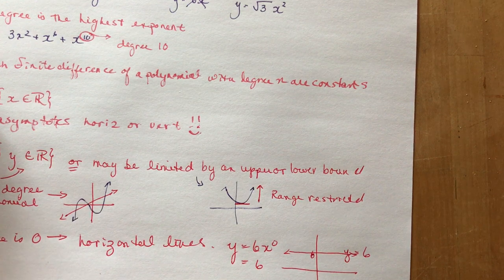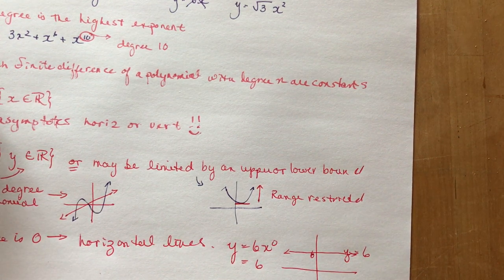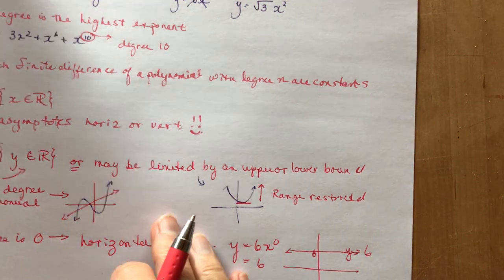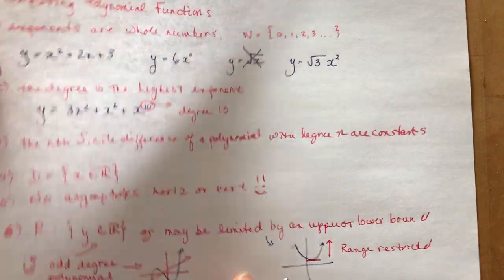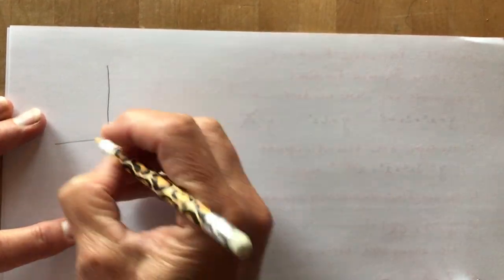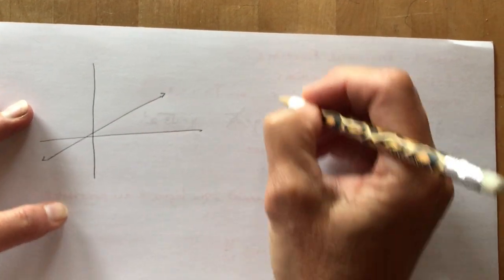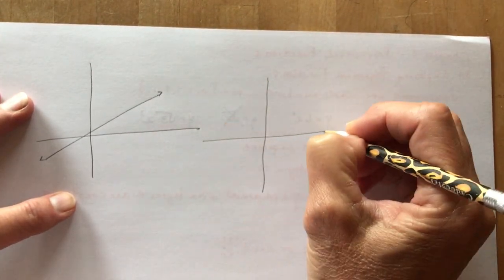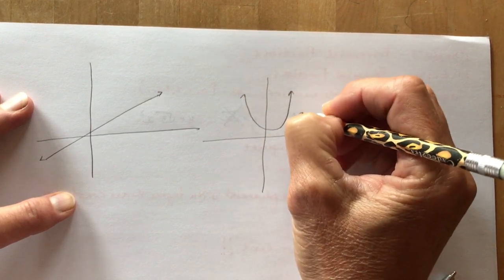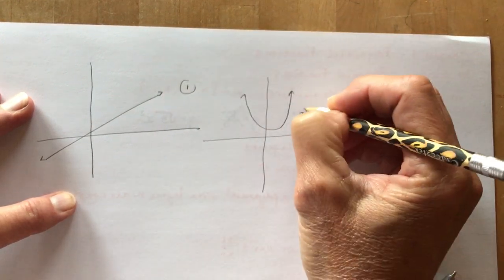What else do we need to know? If we have, maybe we'll sketch a few functions. Different functions. I think you'll be pretty good with these. If we had, there's one degree. Degree one. Second degree function. Parabola. That's two. Degree one. Degree two.